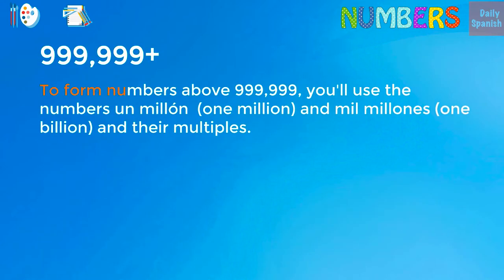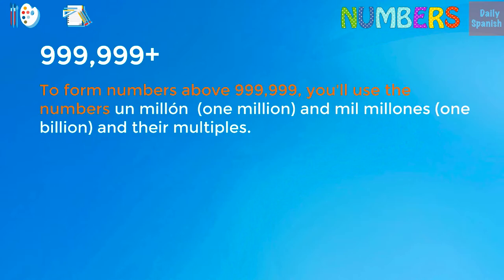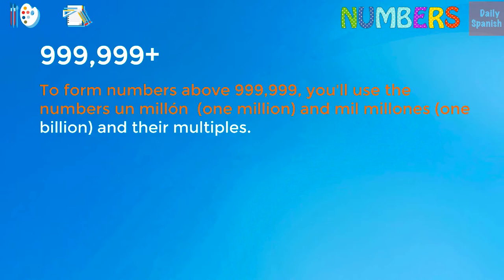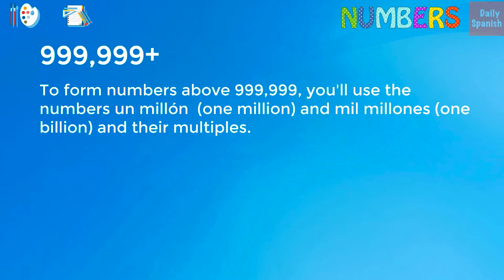To form numbers above 999,999, you'll use the numbers un millón — 1,000,000 — and un billón — 1,000,000,000,000 — and their multiples.